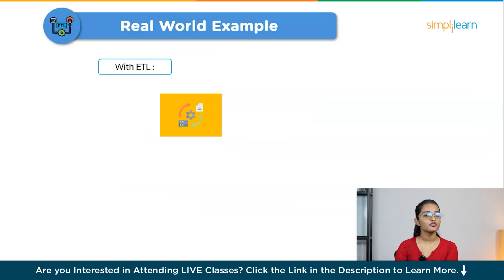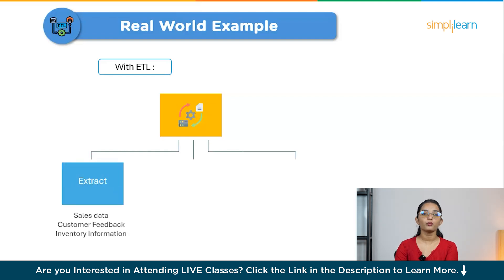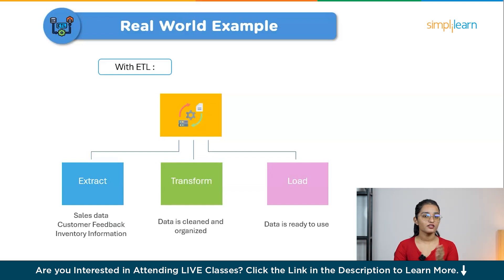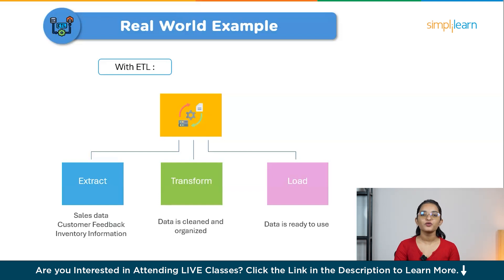With ETL, you extract all the sales data from your website, customer feedback from social media, and inventory information from the warehouse system. The data is cleaned and organized — duplicate entries are removed, different formats are standardized, and missing or incorrect data is fixed. All data is combined into a single format and loaded into a central system like a data warehouse. Now you can analyze everything in one place: which products are trending, who your most loyal customers are, or what inventory needs restocking. You can quickly generate reports, gain insights in real time, and have a clear, organized view of your entire business — making informed decisions, spotting trends, and acting fast.